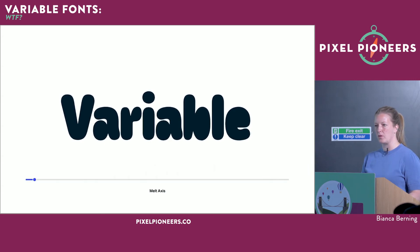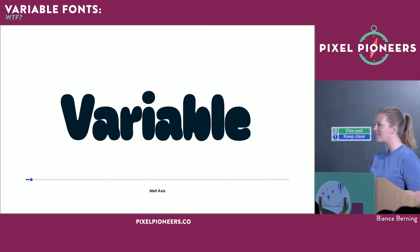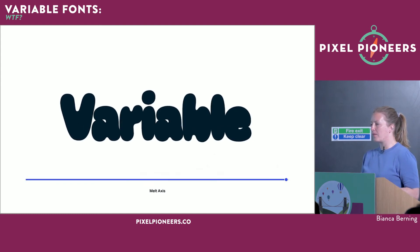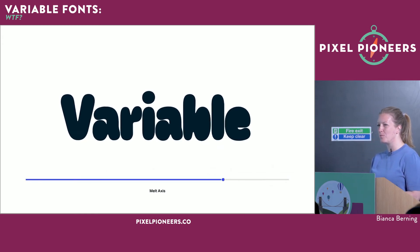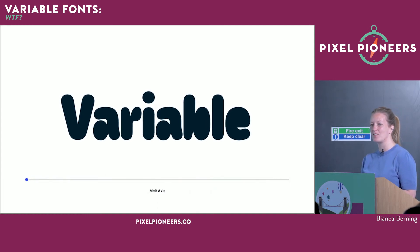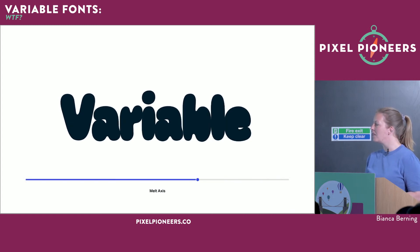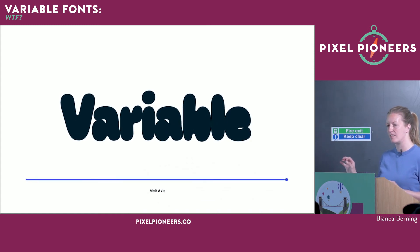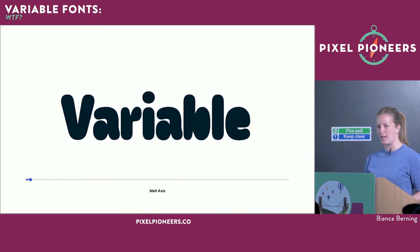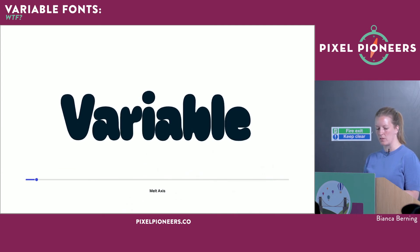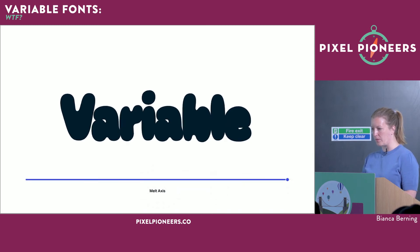As type designers, we got especially curious about this because since Gutenberg — 500-plus years — nothing had really changed for us. Suddenly things were starting to move and we could be more expressive on the web. A lot of type designers were really interested in variable fonts from the very beginning and output lots of expressive experiments — melt axes, spacing axes and more. You can find a lot of variable fonts at v-fonts.com, run by Nick Sherman.